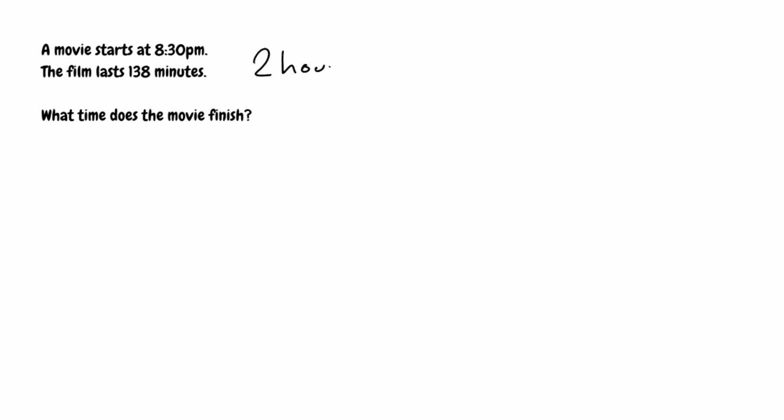First, I'm going to convert 138 minutes into hours and minutes. We know that there are 60 minutes in an hour, so 138 minutes is going to be 2 hours — as that would be 120 minutes — and then we're going to be left with another 18 minutes. So 138 minutes is the same as 2 hours and 18 minutes.